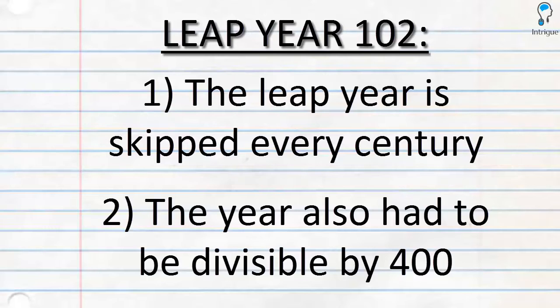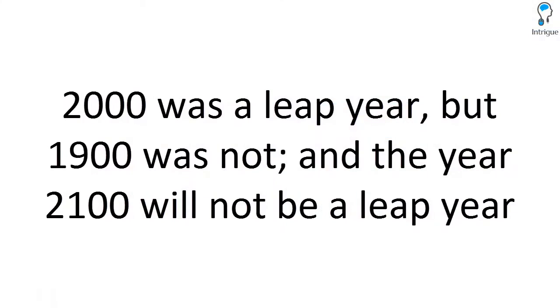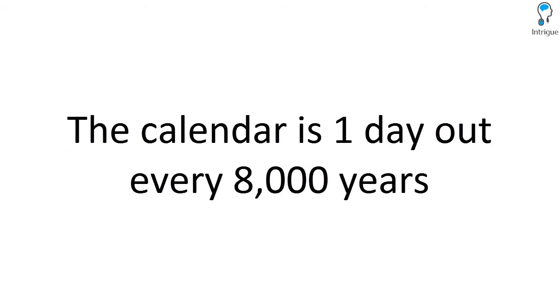In this case, the year will still be a leap year. For example, the year 2000 was a leap year, but not the year 1900, and the year 2100 will also not be a leap year. This means that the Gregorian Calendar is now one day out of sync every 8000 years. Thank you for watching this video, and I hope you have a greater insight into why we have leap years in the first place.